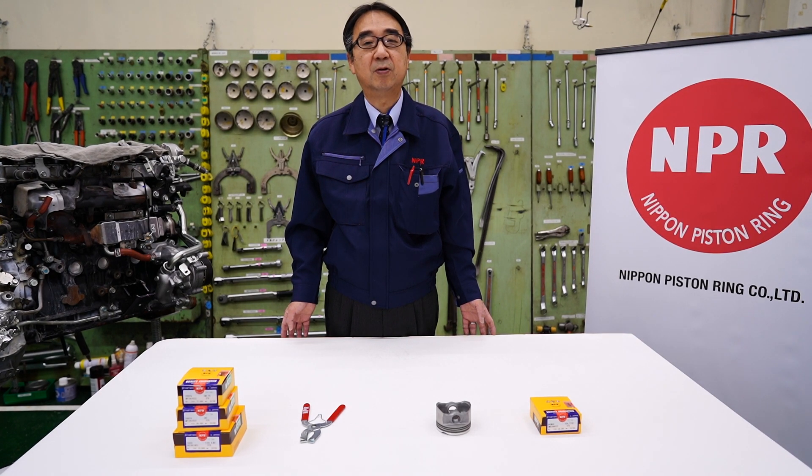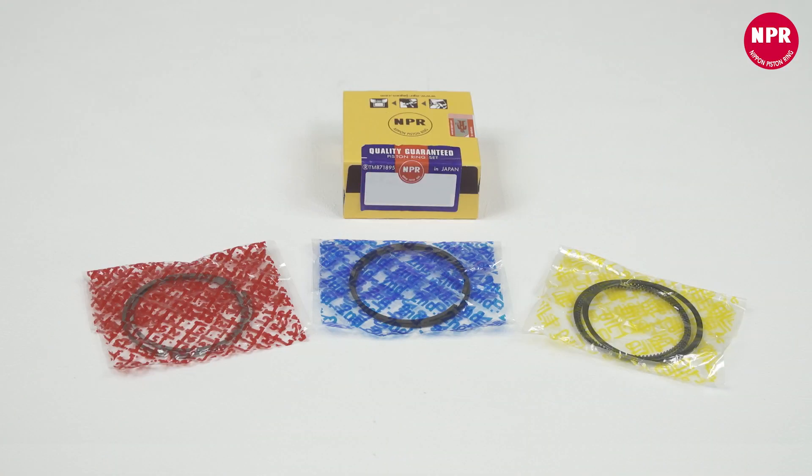In this video, you'll learn how to install piston rings correctly. This product consists of three components: the first ring, the second ring, and the oil ring.